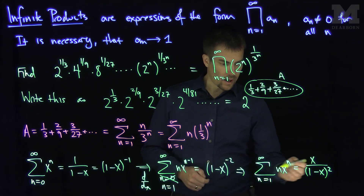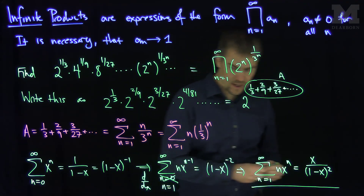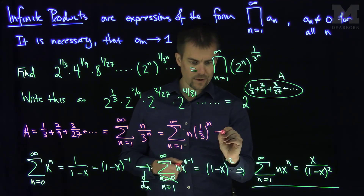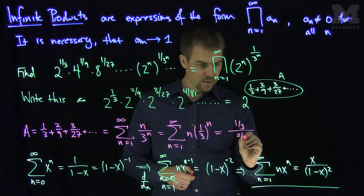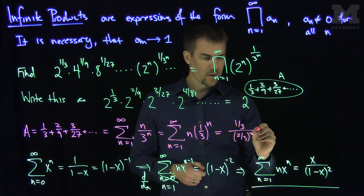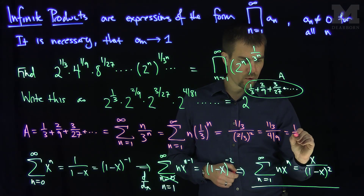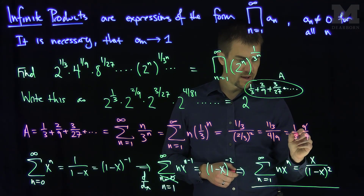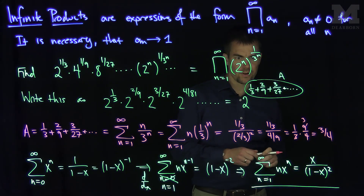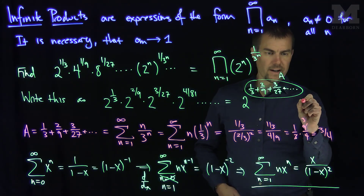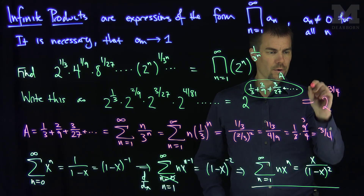Now we can use this formula with x equals one-third. With x equals one-third, this series sums to one-third over one minus one-third squared, which is one-third over two-thirds squared, which is one-third over four-ninths. Flipping this gives one-third times nine over four — the nine and three cancel to give three — so this equals three-quarters. So a equals three-quarters, and our final answer is that this infinite product equals two to the three-quarters power.